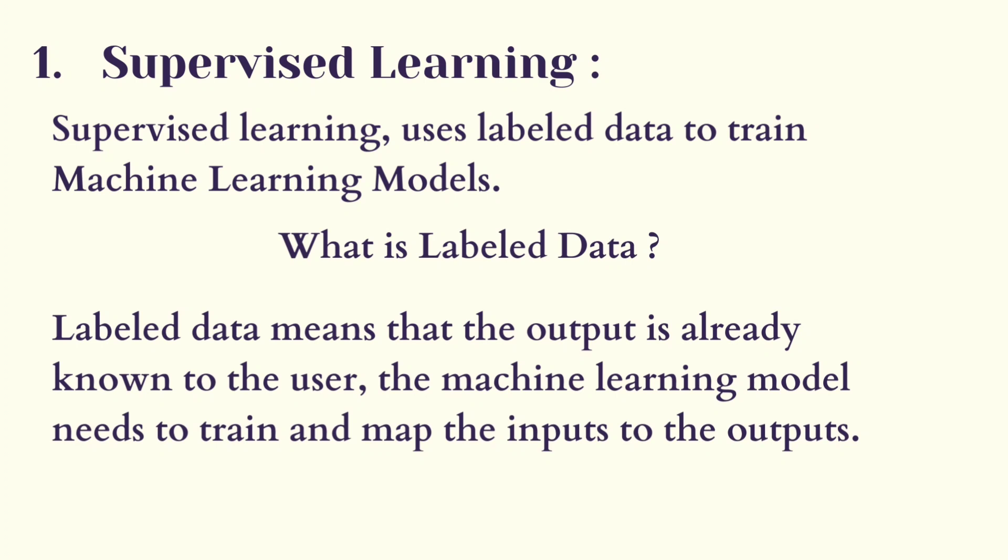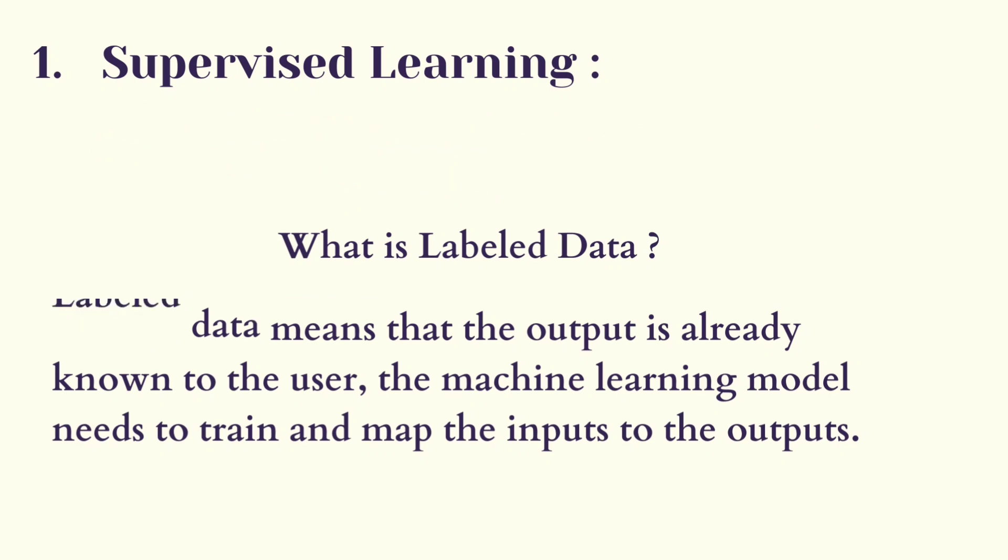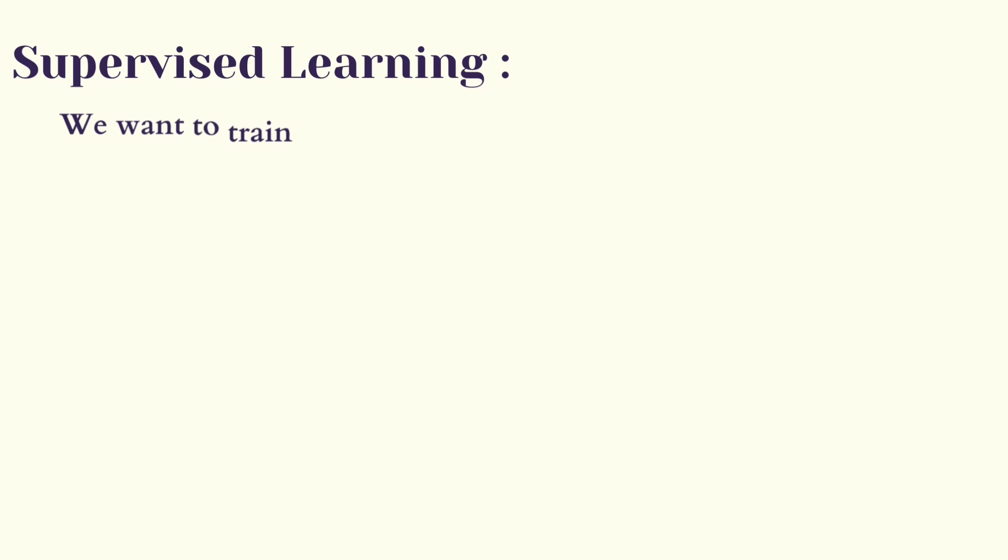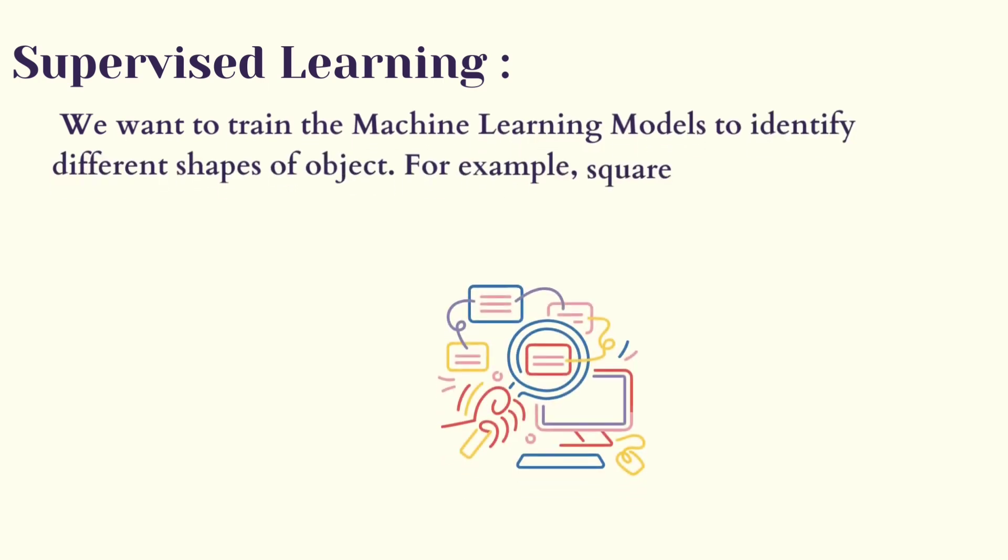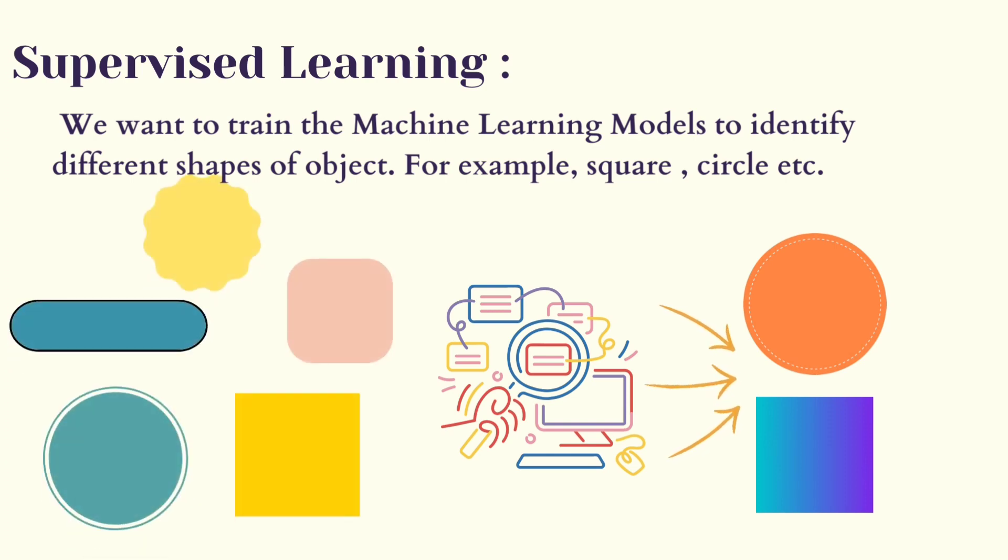To understand it better, let's take an example. We want to train the machine learning model to identify different shapes of objects, for example, circle, square, etc. The user knows the end result, but the machine learning model is fed with all types of images to understand and filter the shapes. After this training, when a new figure is introduced to the machine learning model, it will be able to identify the image.